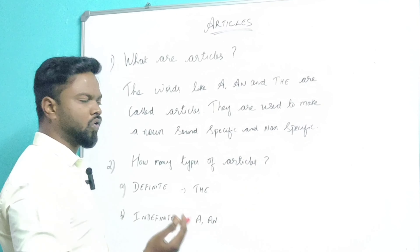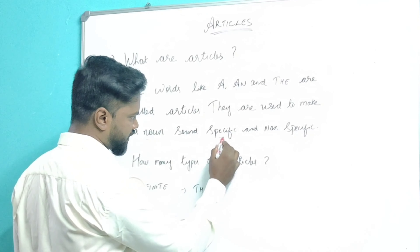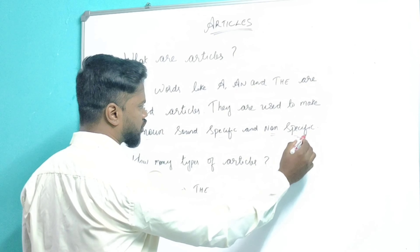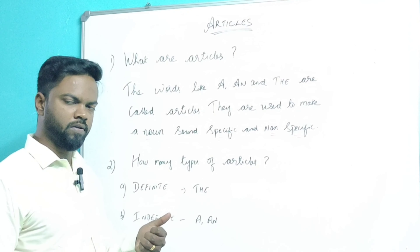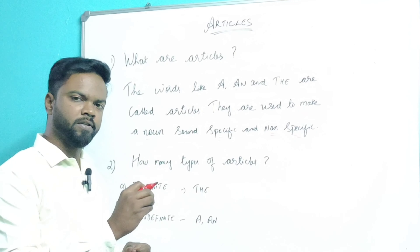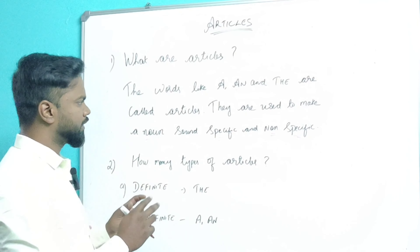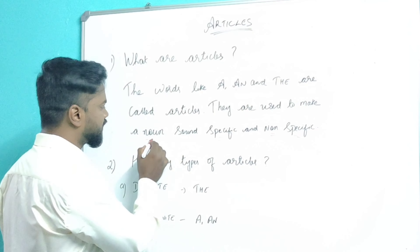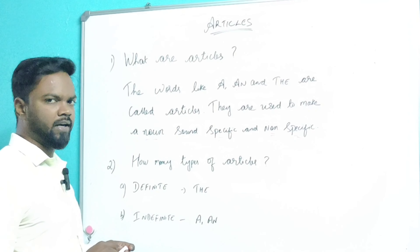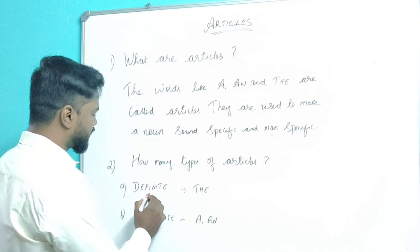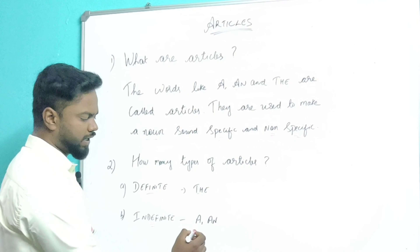What are articles? Words like 'a' and 'the' are called articles. They are used to make a noun sound specific and non-specific. In the last lesson I discussed about nouns — a noun is a word which denotes a person, place, thing, animal, and an idea. So articles make a noun sound specific and non-specific. How many types of articles are there? There are two types: definite articles and indefinite articles.